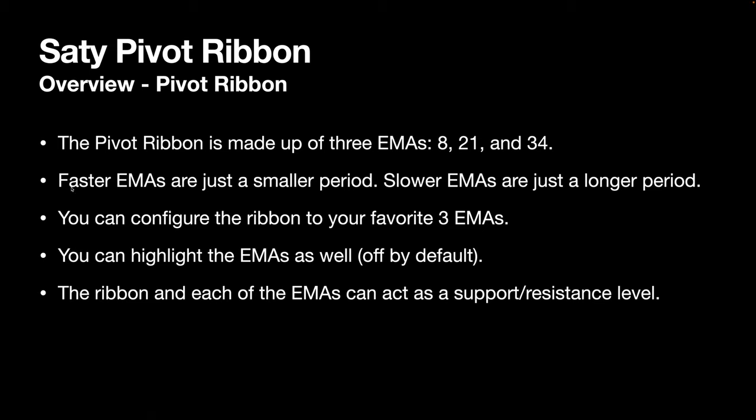The Pivot Ribbon is made up of three EMAs: the 8, 21, and 34. The faster EMA, the 8, is a smaller period — it's counting only 8 candles back — versus a slower EMA like the 34, counting 34 candles back. You can configure these to your favorite three EMAs. There are lots of different ways of using three-EMA strategies — the 9/21/50, 9/21/55, and more. There are lots of different ways you can do it.